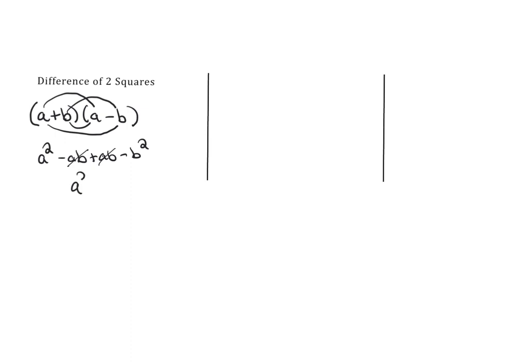When you foil this the middle cancels out and you're left with just a squared minus b squared. This is called the difference of two perfect squares, the subtraction of two terms that are perfect squares.